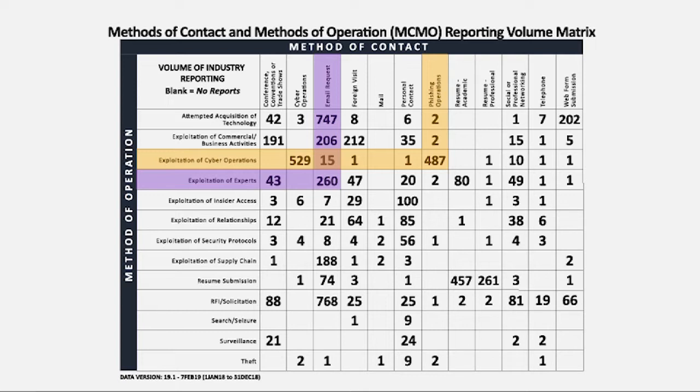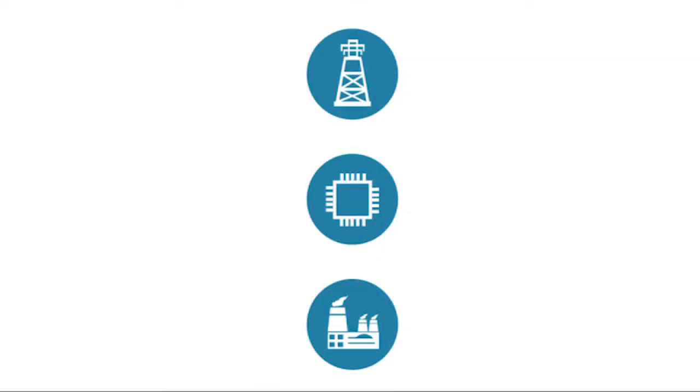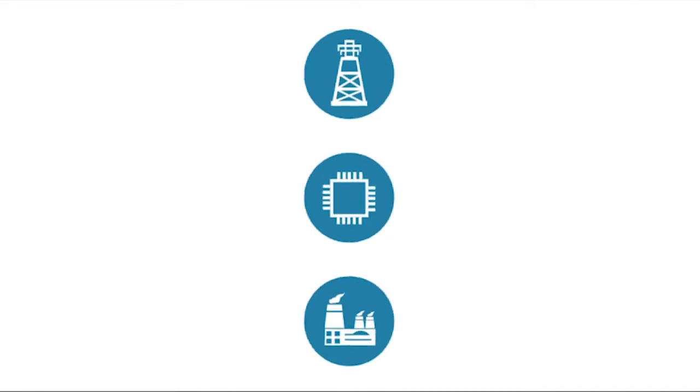A blank space means DSS did not receive reporting at that intersection. A blank space indicating no reporting does not equal no targeting — the DSS counterintelligence team cannot stress this point enough. Just because something is unreported does not mean no one is targeting it. It only means we have not seen recent reporting associated with it, and it may be an area you will need to question cleared contractor security personnel and employees about.